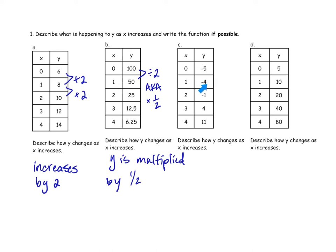The next table goes from negative 5 to negative 4 — we're adding 1. Negative 4 to negative 1 — we're adding 3. So we're not adding the same amount every time. Looking at the pattern: negative 5 to negative 4 we add 1, negative 4 to negative 1 we add 3, negative 1 to 4 we add 5, then add 7. The 1-3-5-7 pattern — the amount added increases by 2 every time — that is a quadratic pattern. So this one is quadratic, not the kind we're dealing with today.